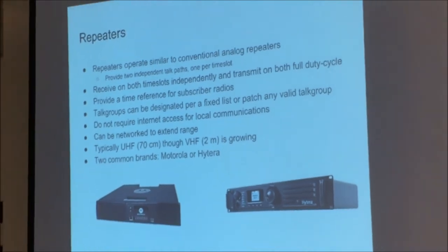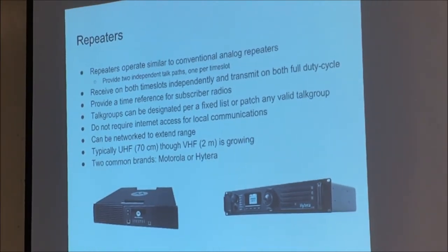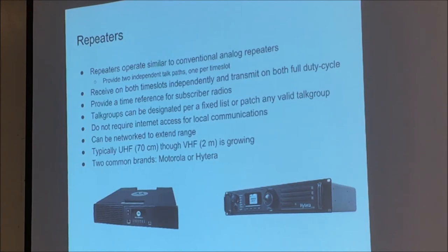DMR repeaters provide both time slots, receiving on both independently and transmitting full duty cycle. The repeater provides the time reference so your radio knows which 30-millisecond time slot to transmit in. A DMR repeater doesn't require internet access and can double capacity compared to a single FM repeater. Most ham DMR repeaters are on 70 cm, with two meters growing, and some operate on 900 MHz. The two most common repeater brands are Motorola and Hytera.